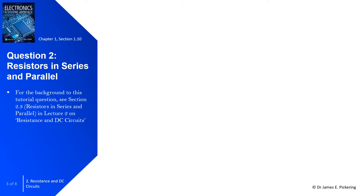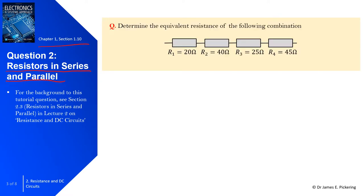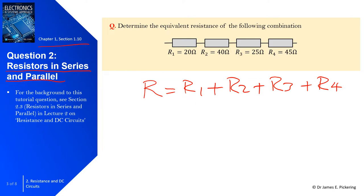Moving to question two, which is based on resistors in series and parallel — see section 1.10 from chapter one for a recap. We have four resistors in series, and when resistors are in series, we simply sum them to get the effective resistance. So the effective resistance R equals 20 plus 40 plus 25 plus 45, which gives 130 ohms.